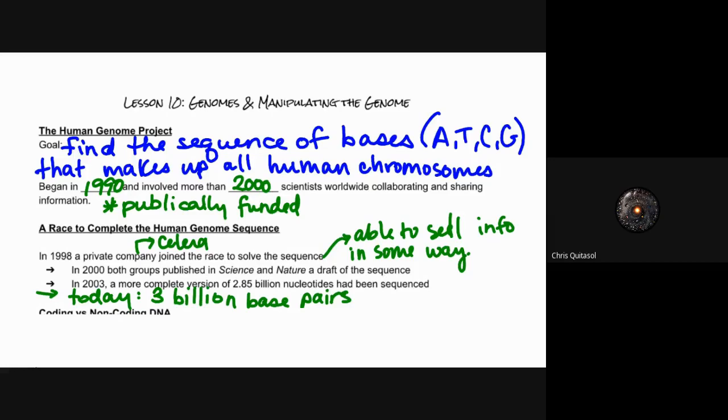So what is the genome and what is manipulating the genome, and how does it fit into what we've learned so far this unit? The Human Genome Project looked to sequence all of the bases that make up every single human chromosome—when you think about the A, T, C, G, all those nucleotides and bases that make up the human chromosome.